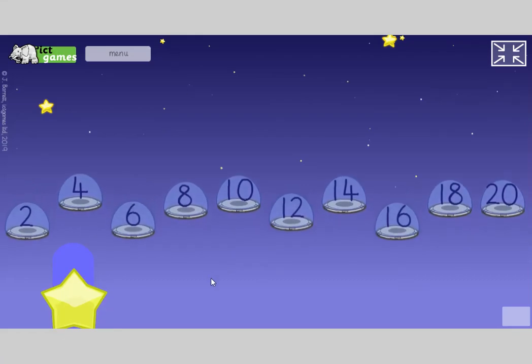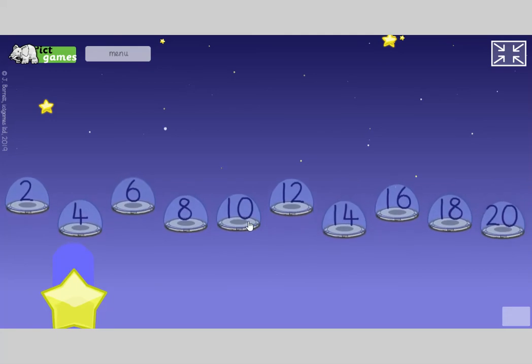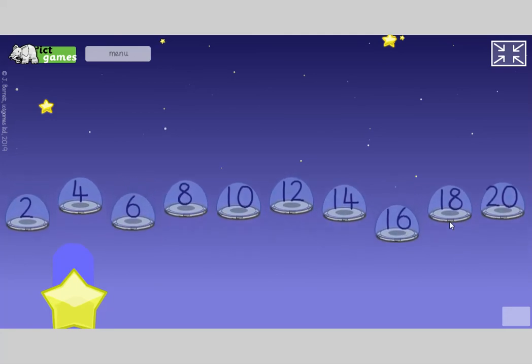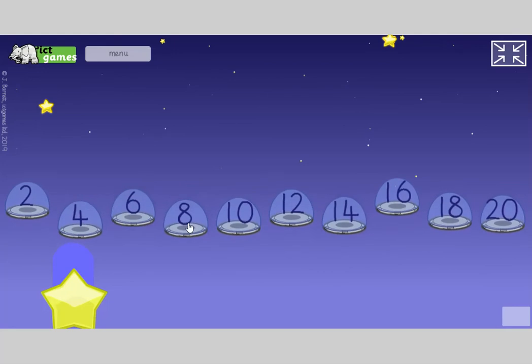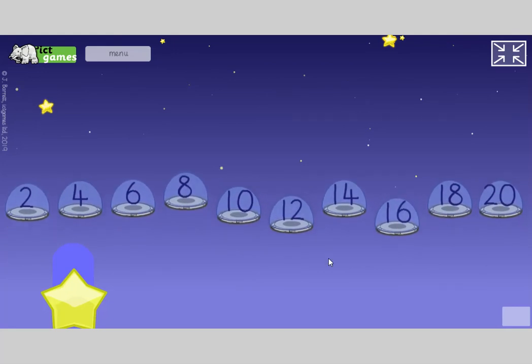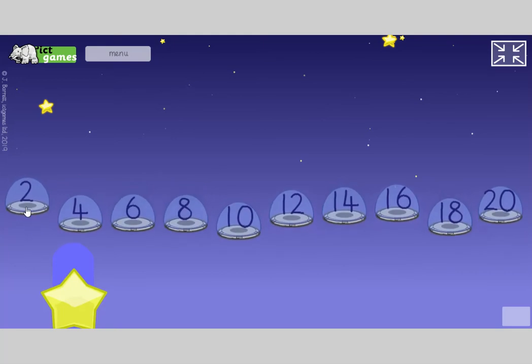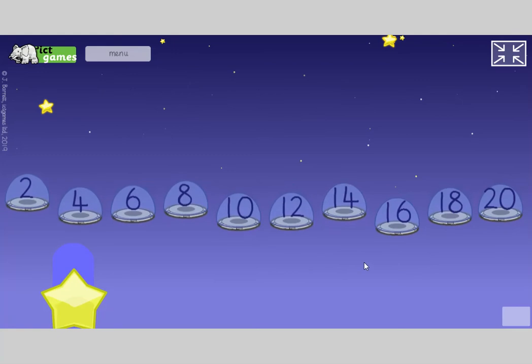Let's go into our next thing, counting in twos. Here we go, everyone join in, make sure you're joining in. Are you ready? Here we go: 2, 4, 6, 8, 10, 12, 14, 16, 18, 20. And again: 2, 4, 6, 8, 10, 12, 14, 16, 18, 20. Make sure you're speaking, I need to hear your voices: 2, 4, 6, 8, 10, 12, 14, 16, 18, 20.